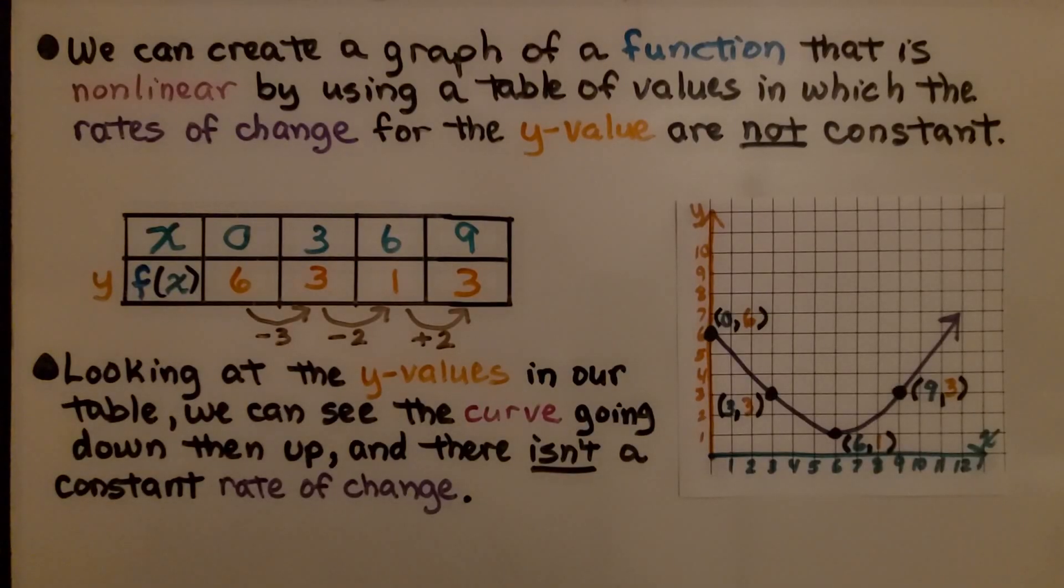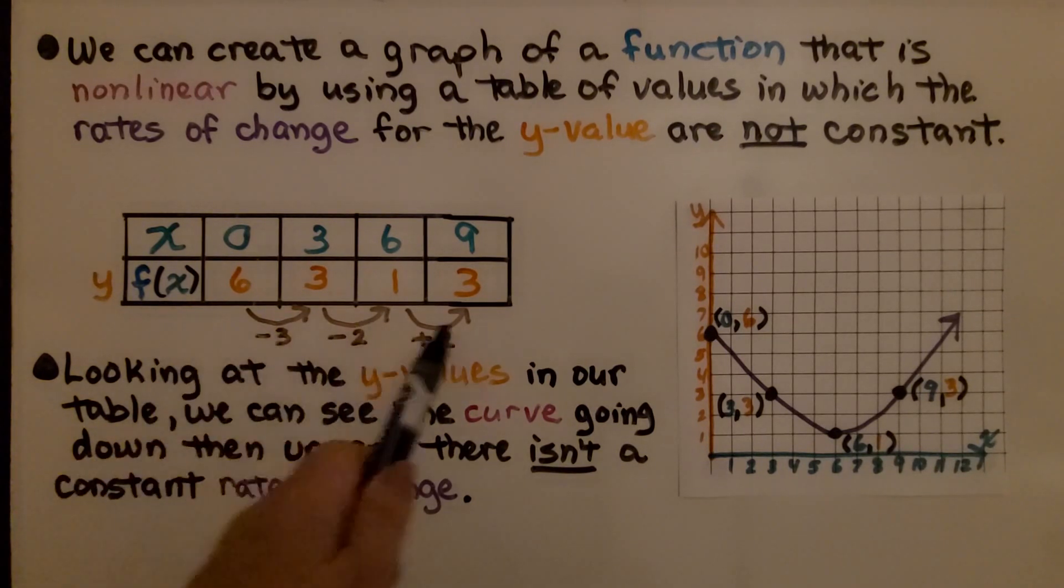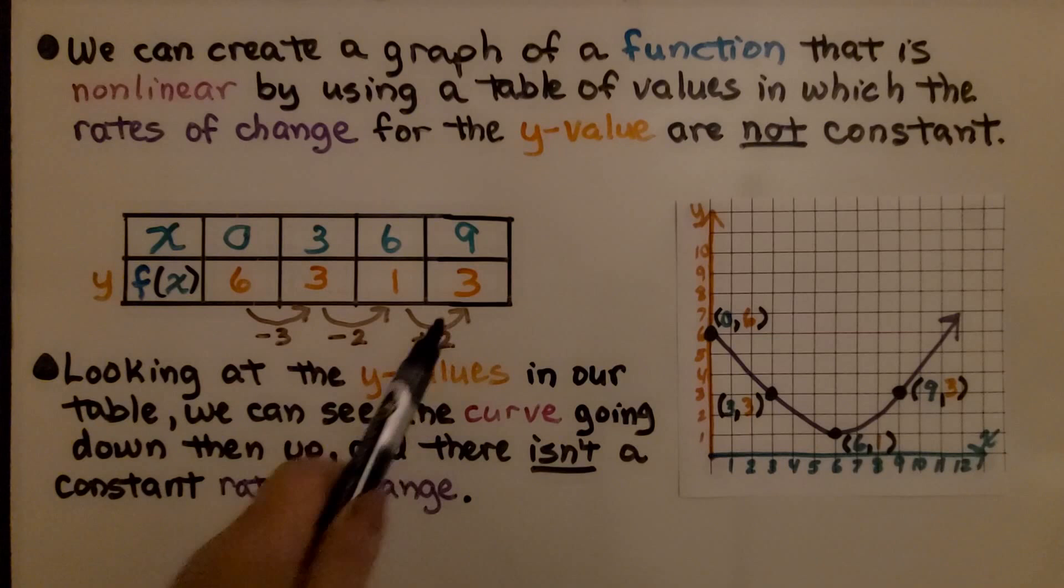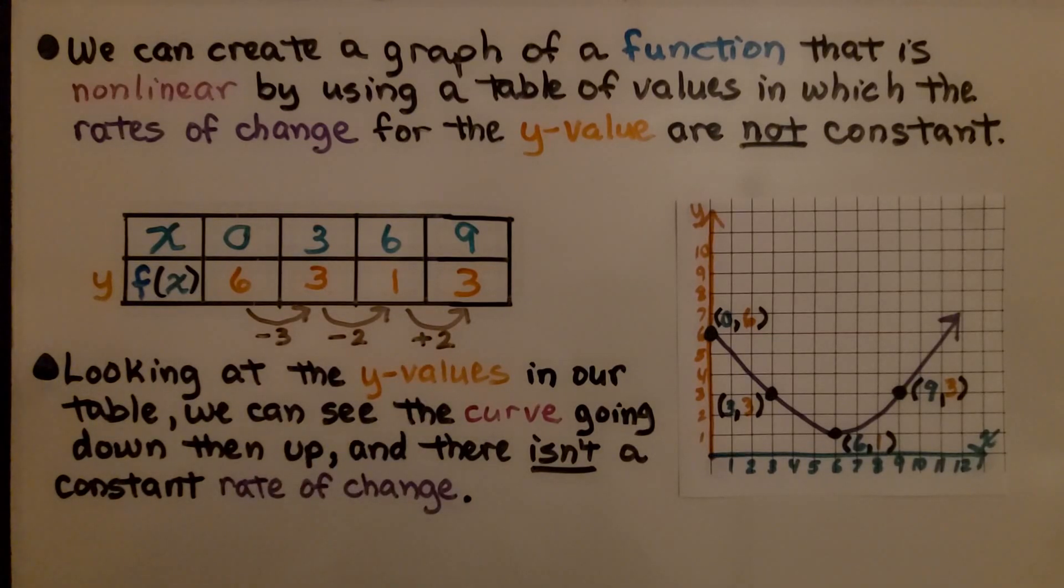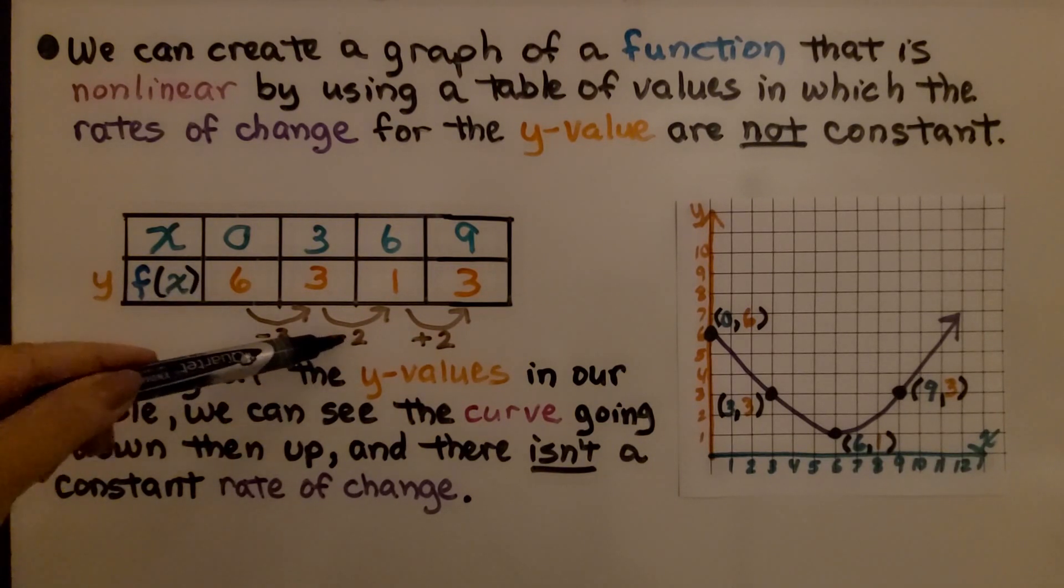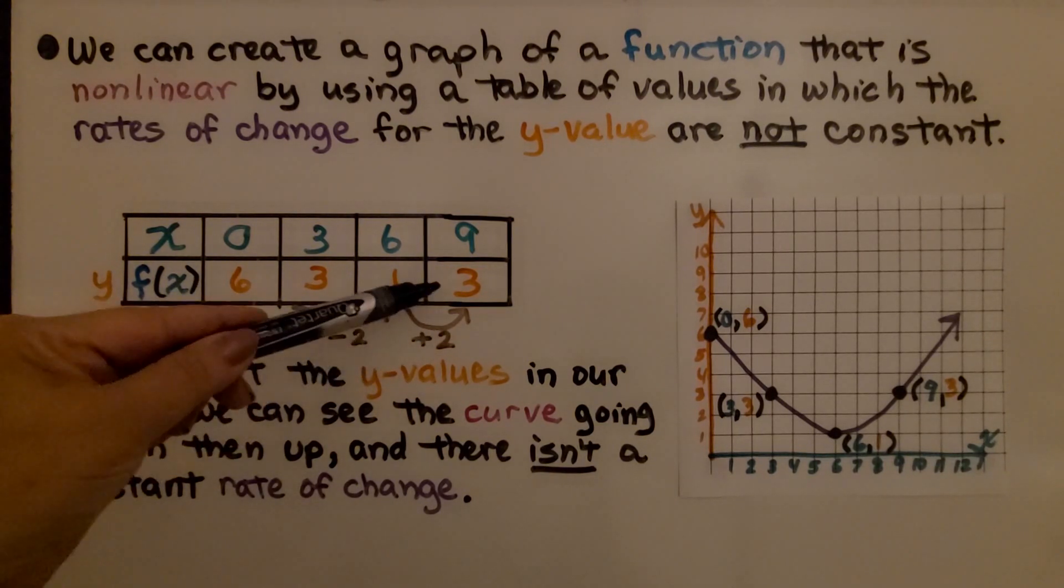We can create a graph of a function that is nonlinear by using a table of values in which the rates of change for the y values are not constant. Looking at the y values in our table, we can see the curve going down, minus three, minus two, and then up, plus two.